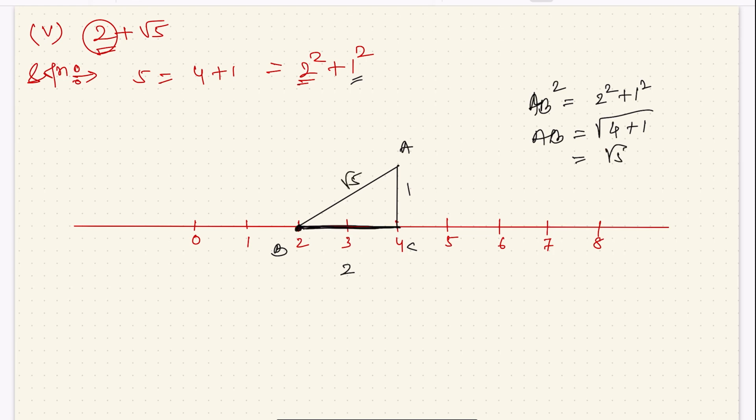Now take B as the pin side, A is the pencil side, and draw an arc like this. And name this point, the arc point, this one, as D.